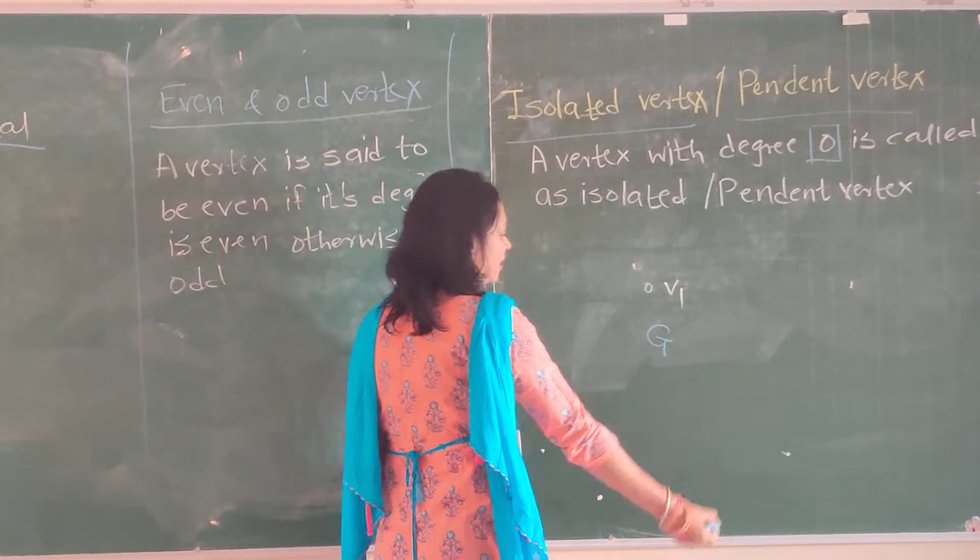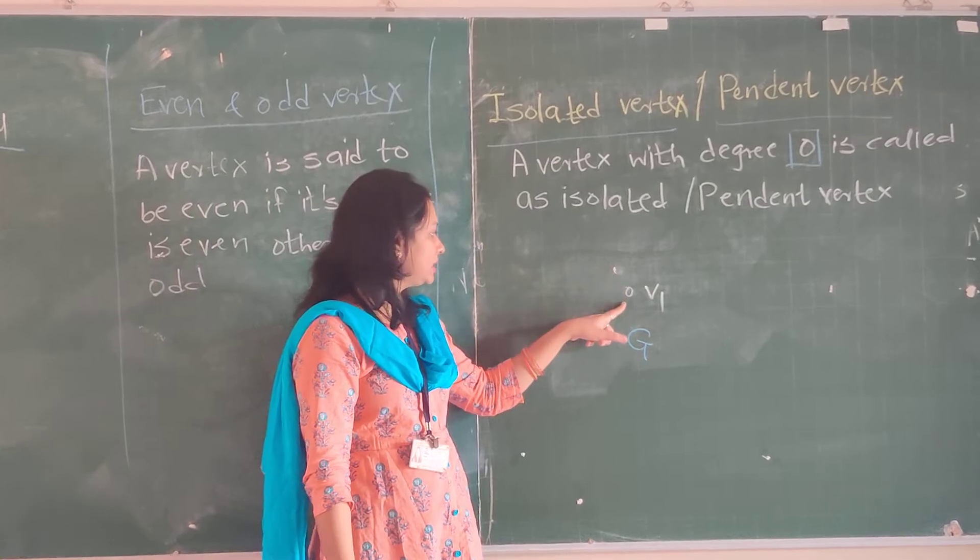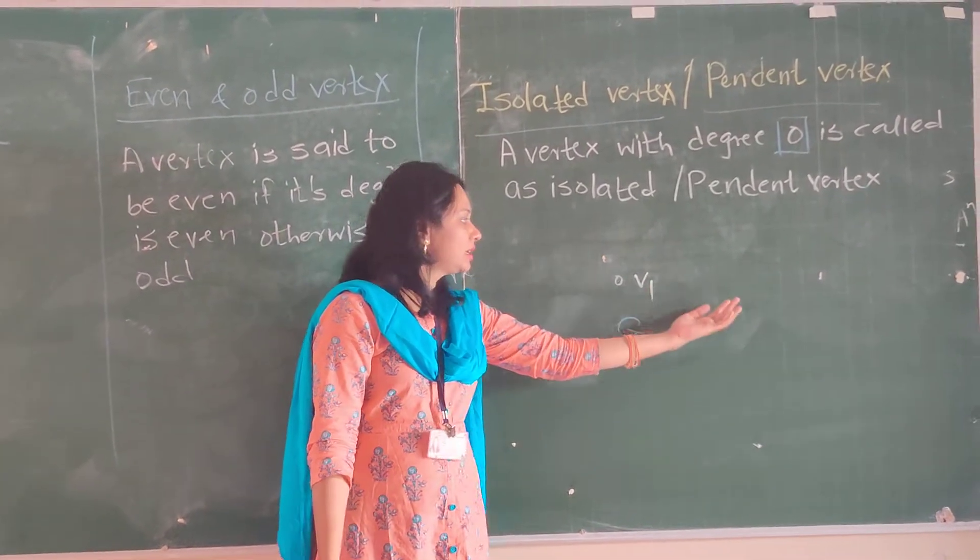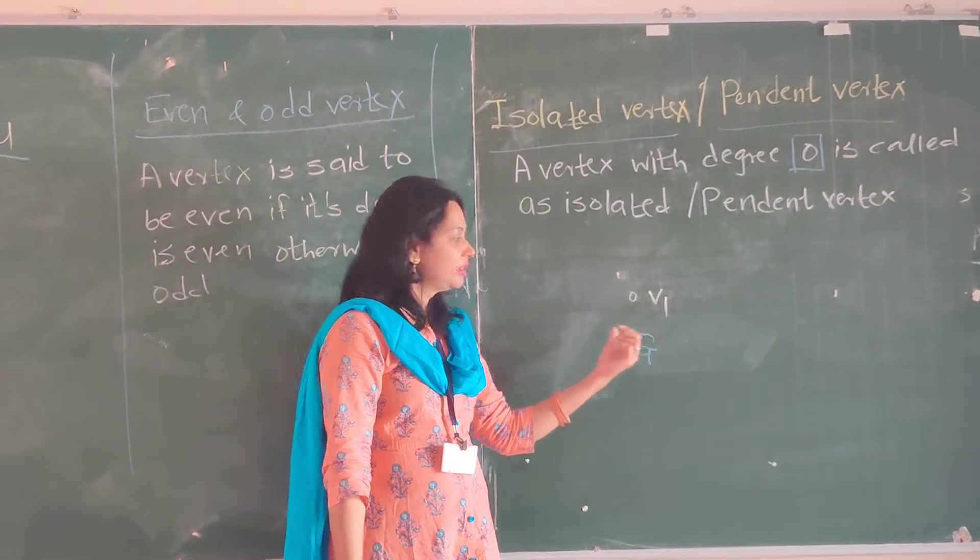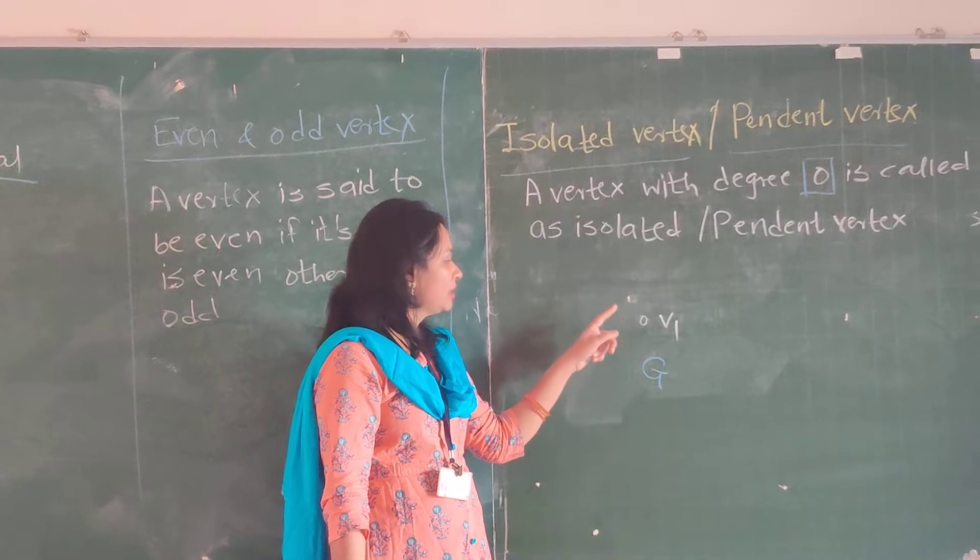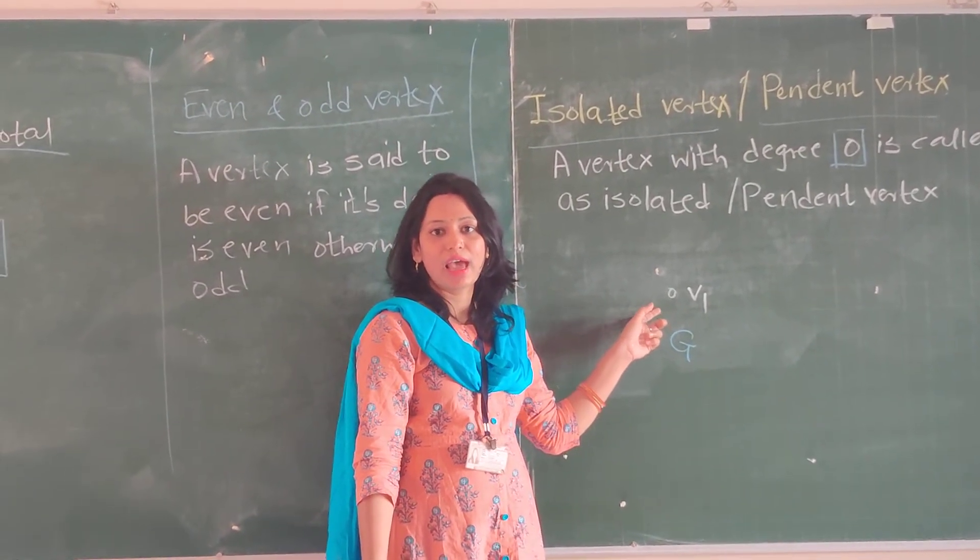Suppose this is graph G which contains vertex V1. We can see it is neither connected to itself nor to any other vertex. That's why V1 is an isolated or pendant vertex, because it has degree 0.